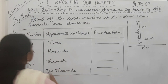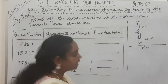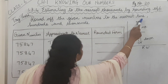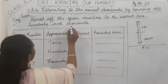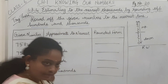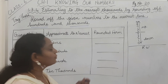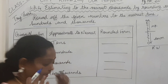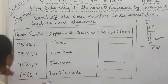Now we are going to do the 'Try These' questions from page 20. We have to round off the given numbers to the nearest tens, hundreds, and thousands. We know how to round off to nearest tens, hundreds, and thousands, so let's proceed.